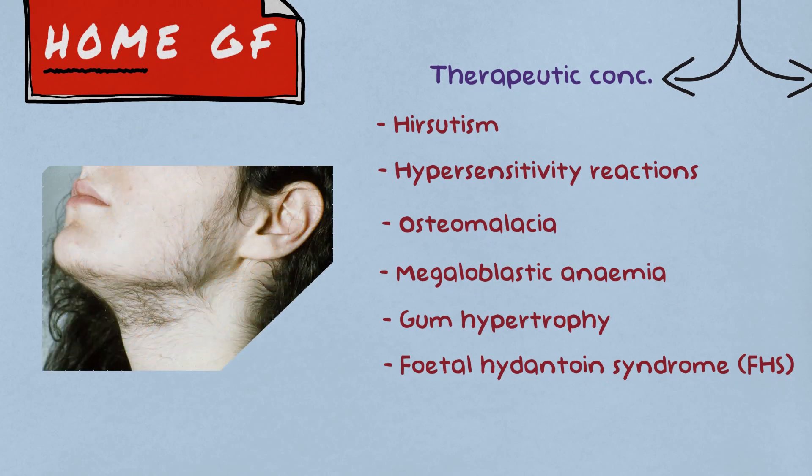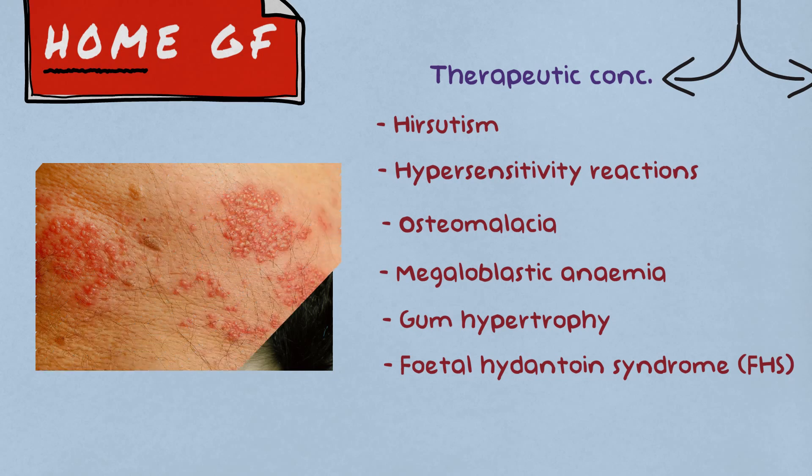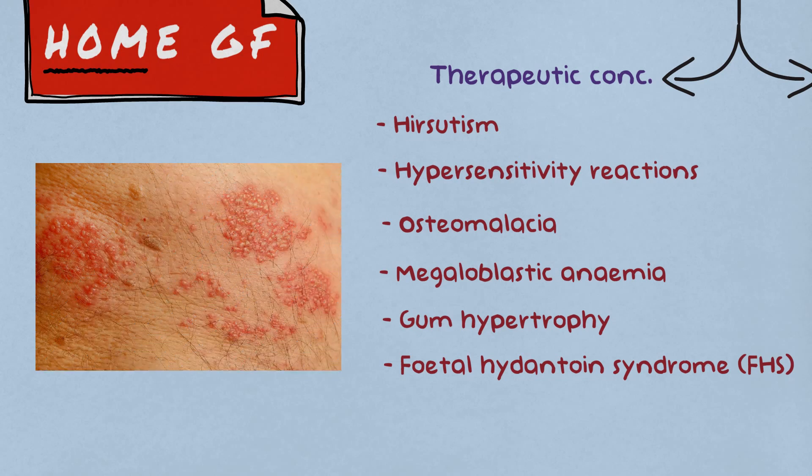Hirsutism is a condition in which women develop excess hair growth. Hypersensitivity reactions or immune reactions, which instead of protecting us, damage our own body tissue like rashes and lymphadenopathy.